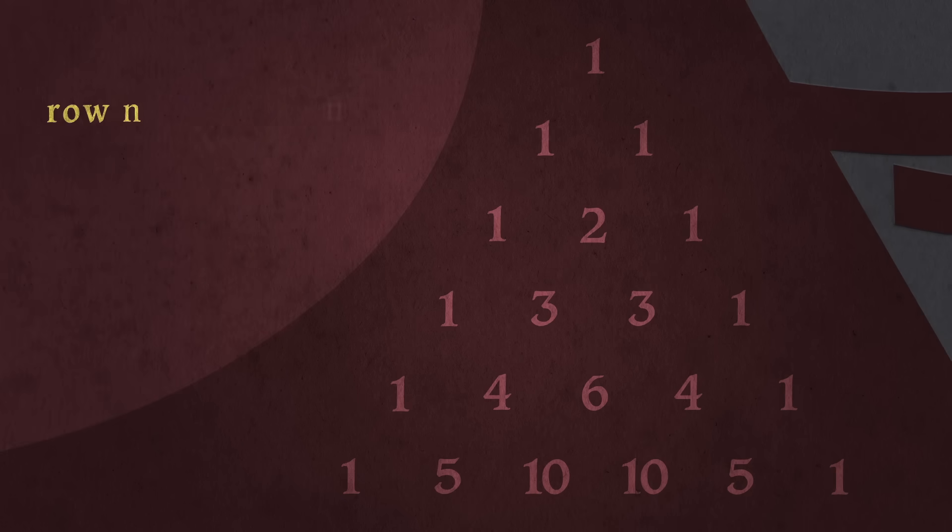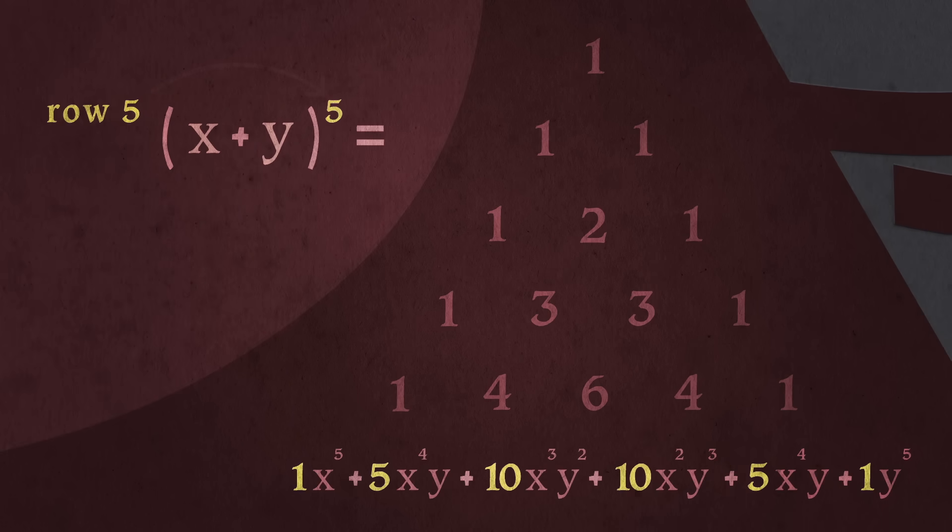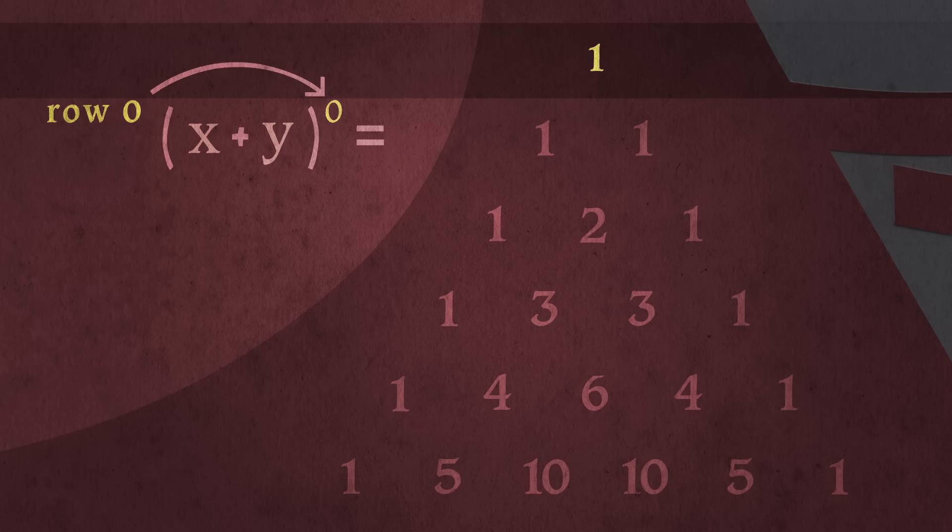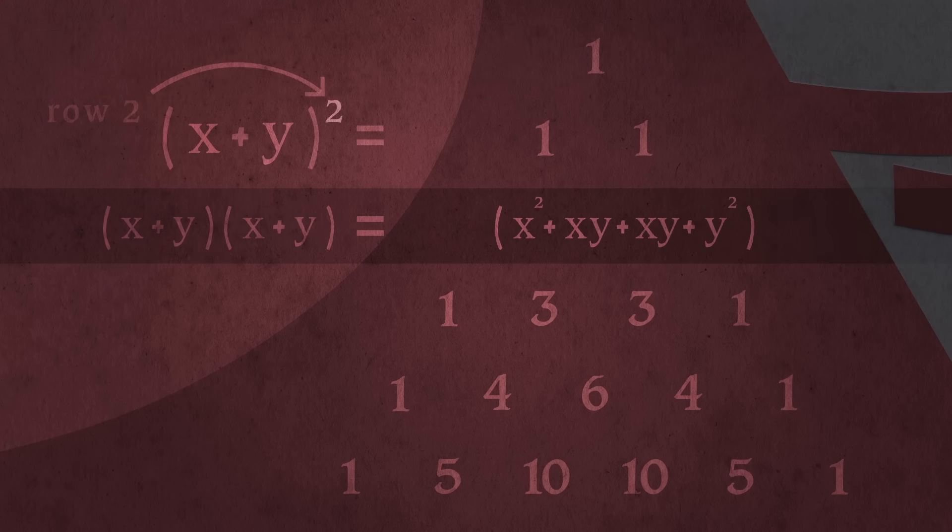Now, each row corresponds to what's called the coefficients of a binomial expansion of the form (x + y) raised to the n, where n is the number of the row, and we start counting from zero. So if you make n equal 2 and expand it, you get x² + 2xy + y².